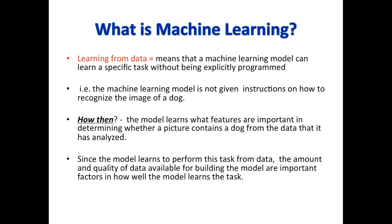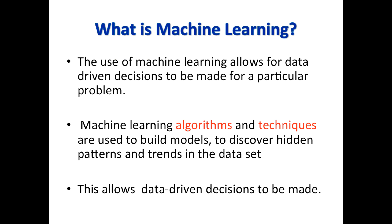We will learn more about models in future lectures. You will see how important the amount of data is in model building. If one model learns on data containing 5,000 data points versus another model which learns from 10,000 or 20,000 data points, those models will differ and you will see some difference in their predictions. Usually the model that learns from more data points tends to predict better. This is in general, but it also depends on the quality of data presented. The use of machine learning allows for data-driven decisions to be made, using algorithms and techniques to build models that discover hidden patterns and trends in the dataset.